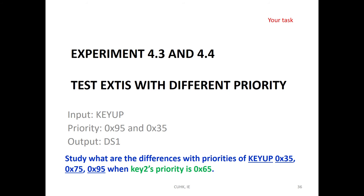Experiment 4.3 and 4.5, then change the key up to the priority 75 and also control DS1. It means that key up, you will set the priority 7, 5, 5, then compare the key 2, 6, 5. What's the difference of the priority?